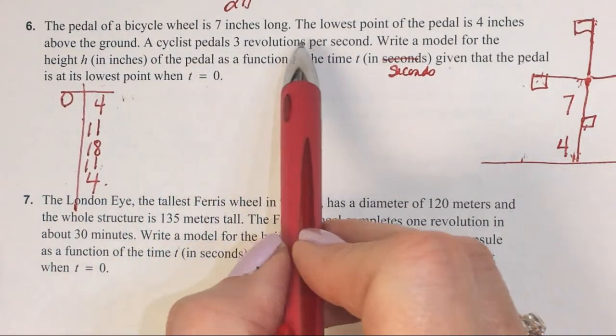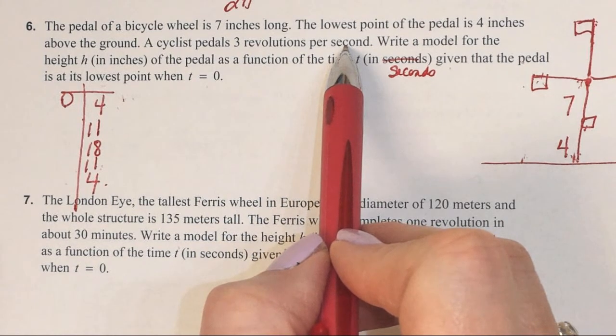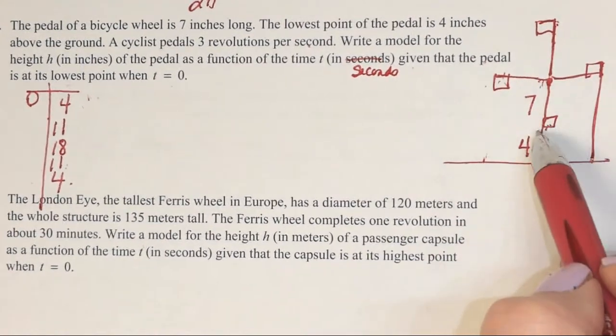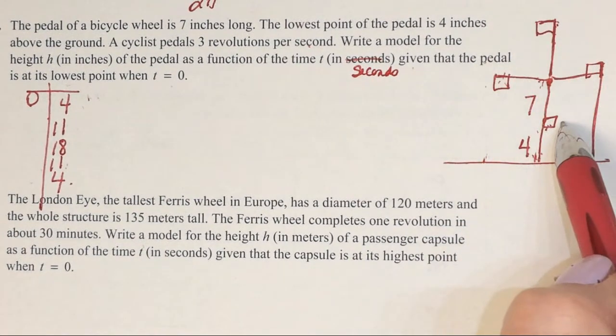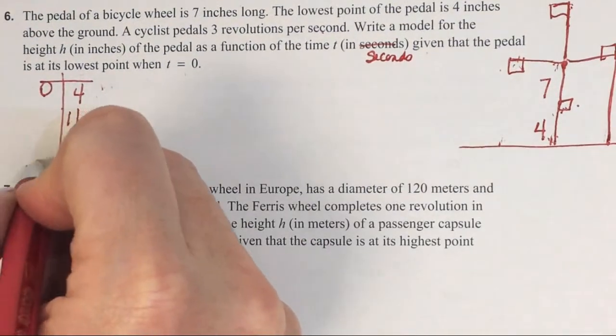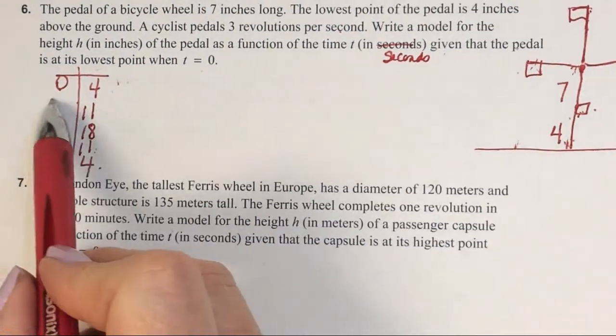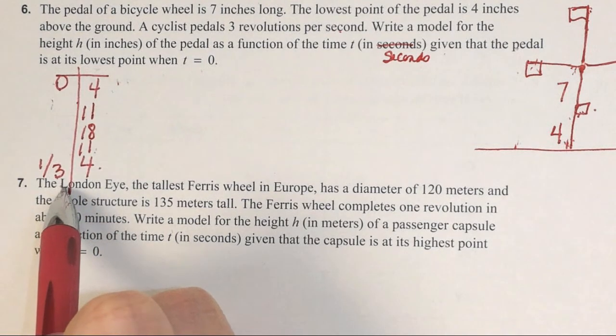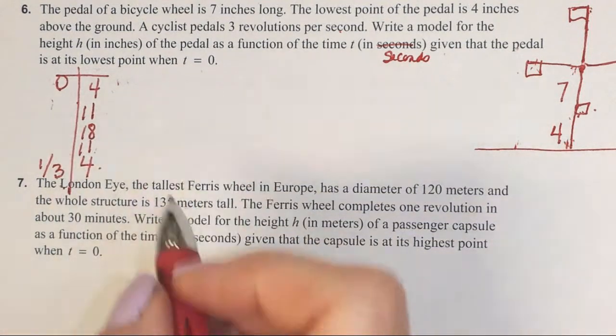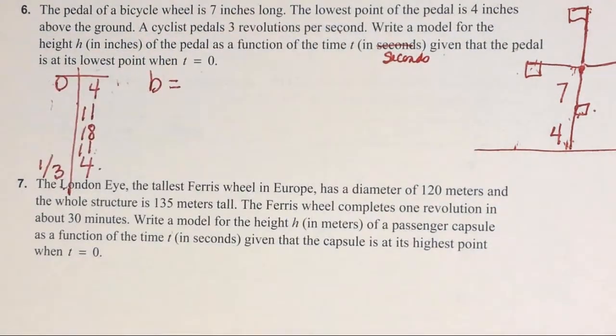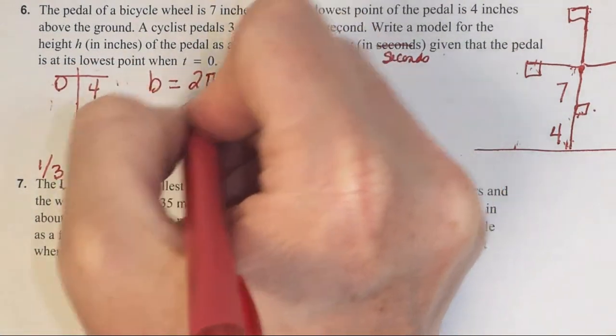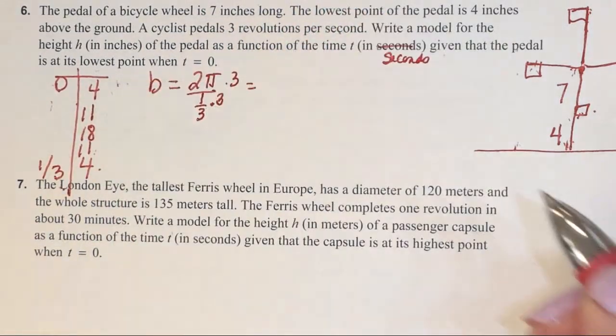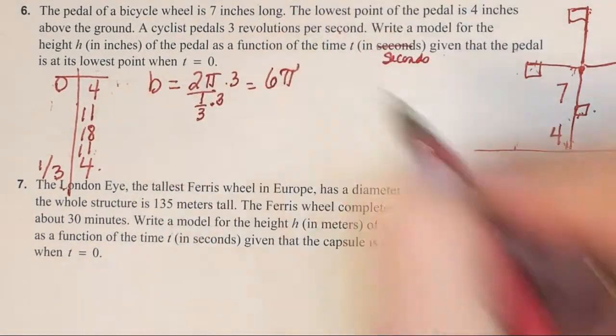This is the tough part. They're cycling 3 revolutions per second. How long does it take to make 1 revolution? 1/3 of a second. For 1 revolution, it's 1/3 of a second. I could find all these values, but it's not necessary. That's telling us the period. How do I find B? 2π divided by that period. I multiply top and bottom by 3. What is it? 6π.